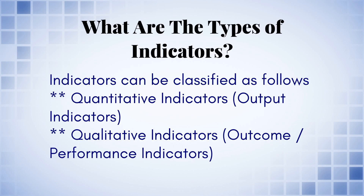What are the types of indicators? Indicators can be classified as follows: quantitative indicators, output indicators, qualitative indicators, and outcome performance indicators.